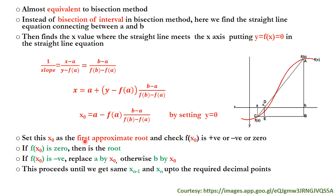We set x₀ as the first approximate root and check whether f(x₀) is positive, negative, or zero. If f(x₀) = 0, then x₀ is the exact root. If f(x₀) is negative, we replace a by x₀. If it is positive, we replace b by x₀. This procedure continues until xₙ₋₁ and xₙ agree up to the required decimal places.